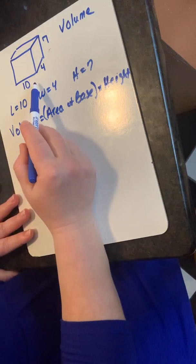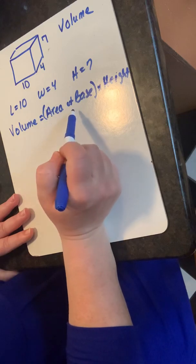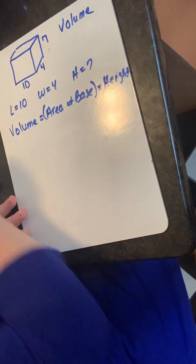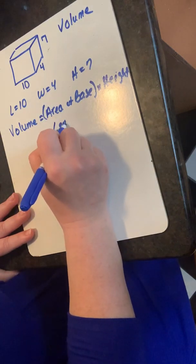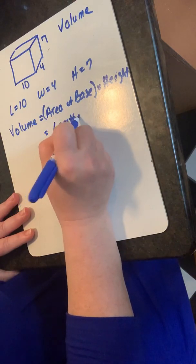For a rectangle, the area equation is length times width. La ecuación del área es largo por ancho.